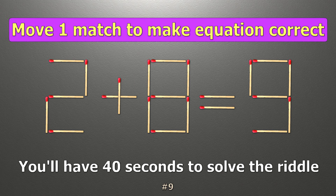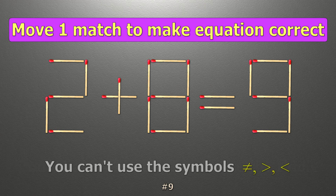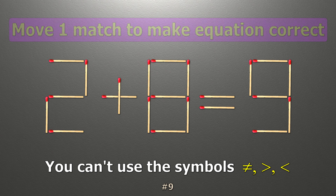We have the equality 2 plus 8 equals 9. Our equality is wrong. We need to move one match to make our equality correct.